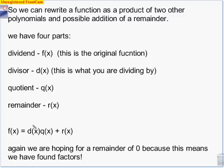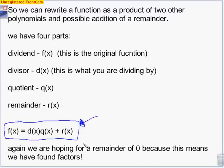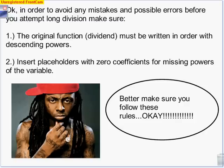The key thing to focus on: the original function is equal to the divisor — which is your original factor — times the quotient, plus any remainder. We're really hoping the remainder is zero. The divisor times the quotient plus the remainder equals the original dividend. In order to avoid mistakes before you attempt long division: one, the original function must be written in order with descending powers. Also, if any powers are missing, insert placeholders of zeros for those variables.